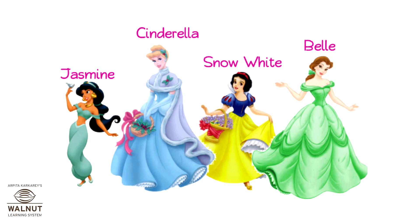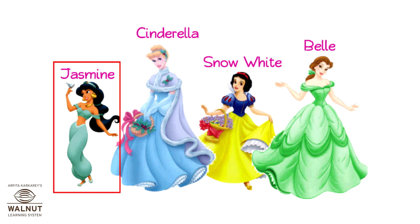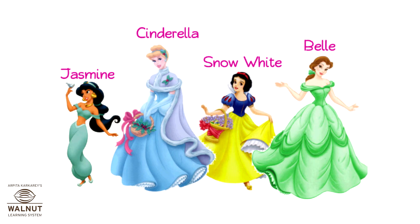We have to make the shortest one stand first. Who is the shortest? Jasmine. So Jasmine stands first — she is already standing first. Good. From the other three, who is the shortest? Snow White. Snow White stands second.